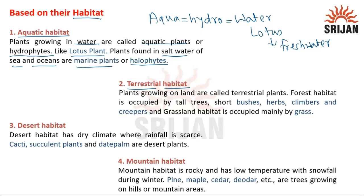In terrestrial habitat, plants growing on land are called terrestrial plants. Land may have two parts: forest and grassland. The forest habitat is occupied by tall trees, short bushes, herbs, climbers, and creepers. Grassland habitat is occupied mainly by grass.